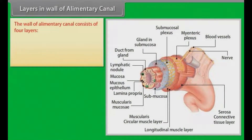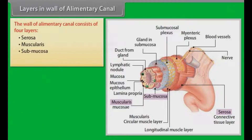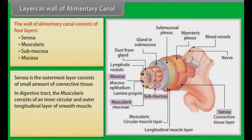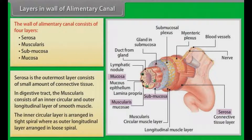The wall of the alimentary canal consists of four layers: serosa, muscularis, submucosa, and mucosa. The serosa is the outermost layer consisting of a small amount of connective tissue. In the digestive tract, the muscularis consists of an inner circular and outer longitudinal layer of smooth muscle. The inner circular layer is arranged in a tight spiral, whereas the outer longitudinal layer is arranged in a loose spiral.